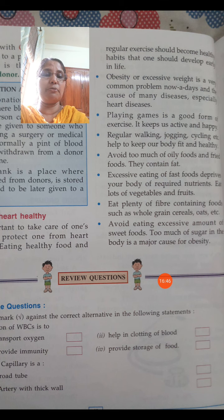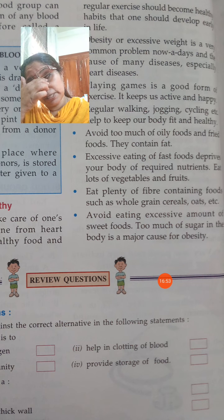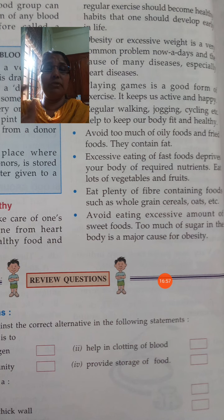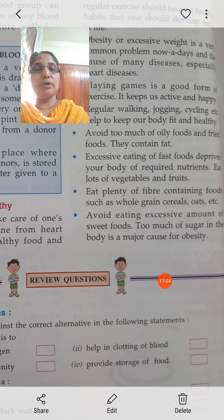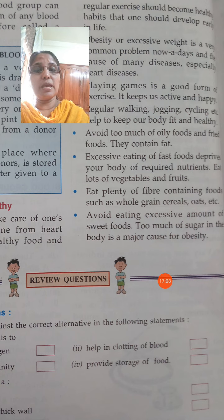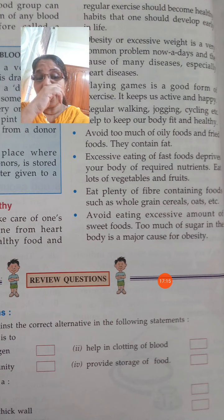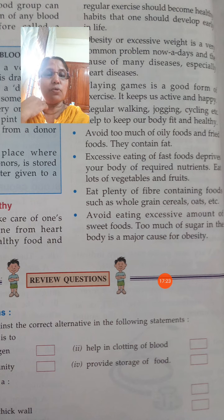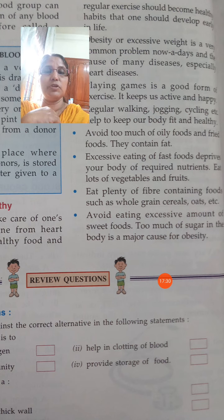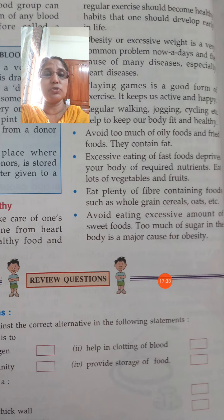Eat lots of vegetables and fruits. Fast foods like noodles and chips (lays) have certain chemicals added to them, so they cannot nourish our body — we need fresh fruit and vegetables. Eat plenty of fiber-containing foods such as whole grains, cereals, and oats — if we eat these, the body is healthy. Excessive eating of fast food deprives your body of required nutrients. Avoid eating excessive amounts of sweet food, as too much sugar in the body is a major cause of obesity.